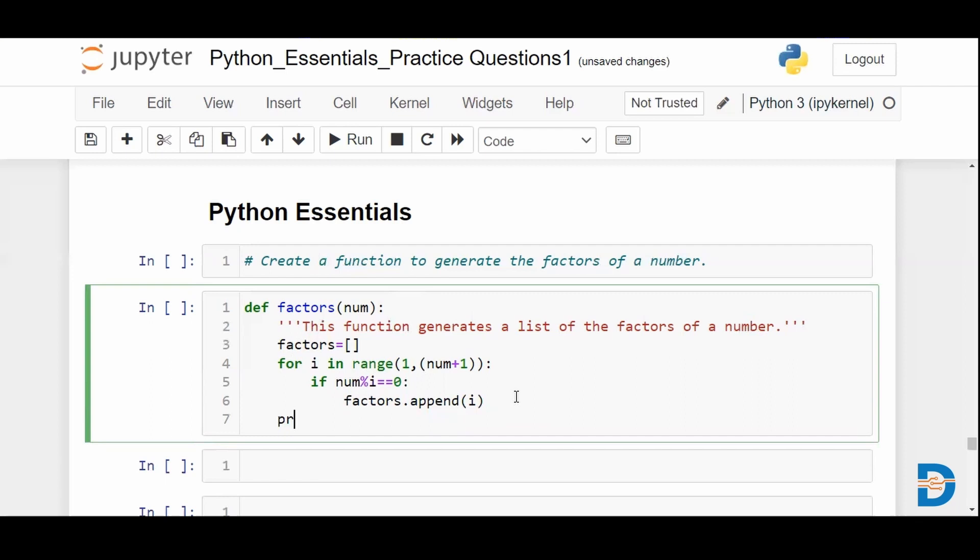Once that is done, we're basically going to print factors. We could print it if you like to have a statement which says these are the list of factors, or we could simply return the list of factors itself. That's also quite possible.